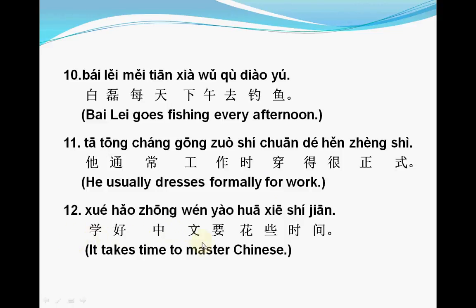The next sentence: 学好中文，要花些时间。 学 means 'study' or 'learn', 好 means 'good', 中文 means 'Chinese', 要 means 'will', 花 means 'take', 些 means 'some', 时间 means 'time'. So: To learn Chinese well will take some time.